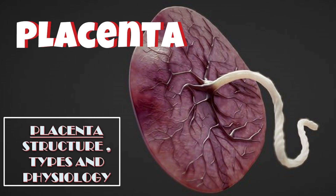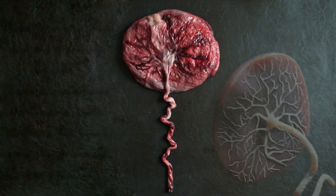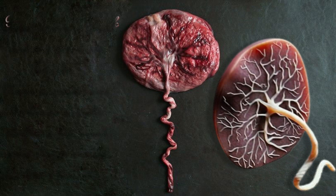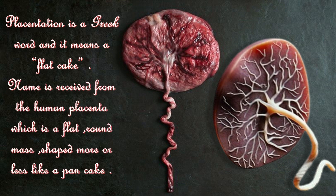The placenta, its structure, types and physiology is the topic of our discussion today. Placentation is a Greek word and it means a flat cake. The name is derived from the human placenta which is a flat, round mass, shaped more or less like a pancake.